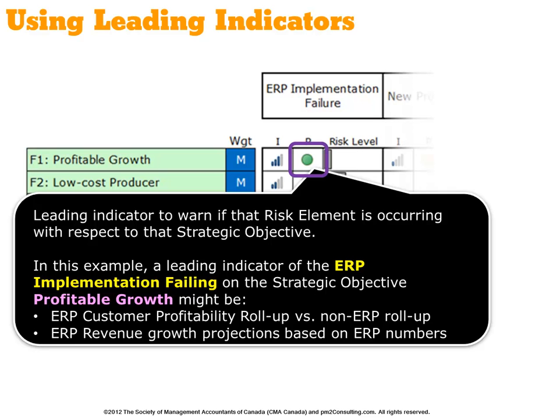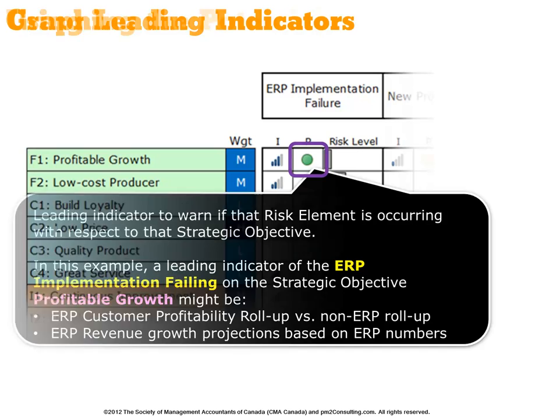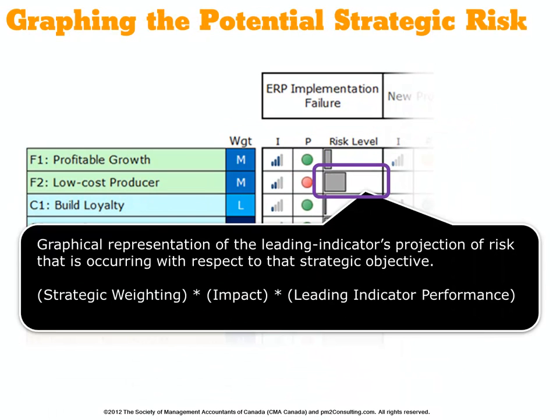These are indicators about whether that specific risk is related to that specific strategic objective at this point in time. The third column mathematically calculates and provides a visual representation of the level of risk that that performance indicates may be occurring.